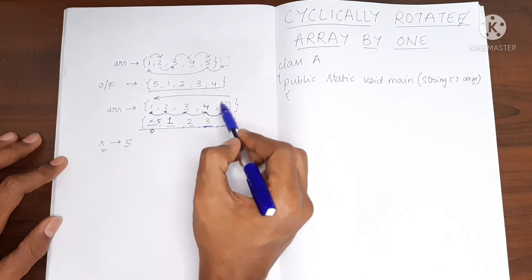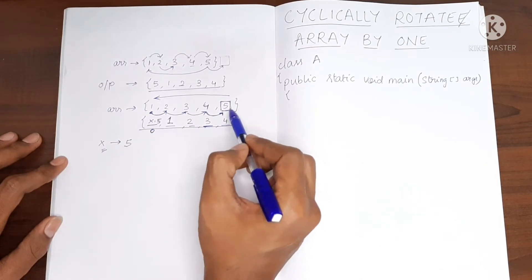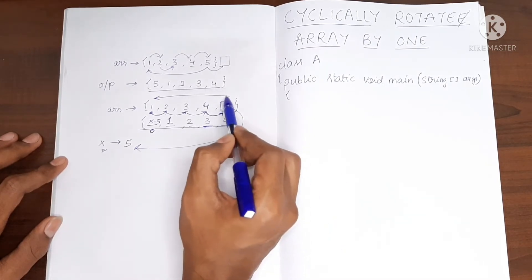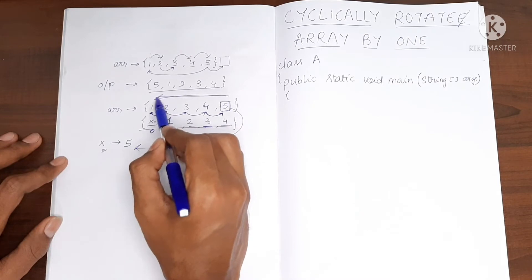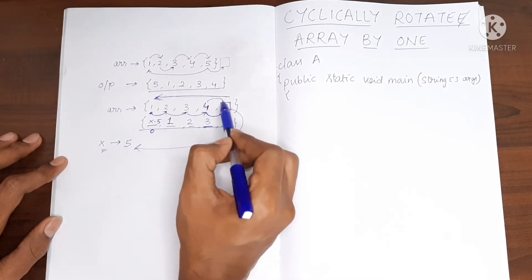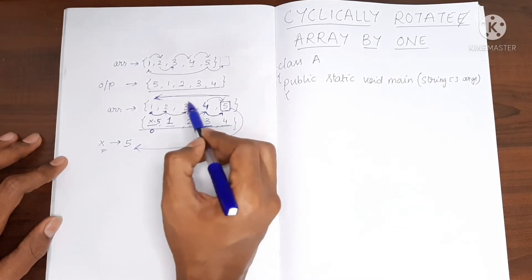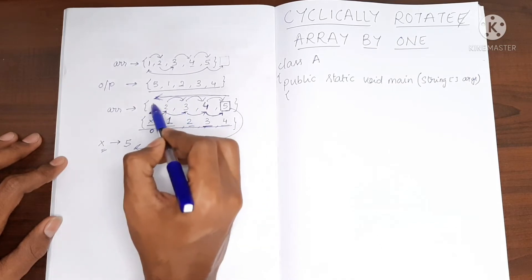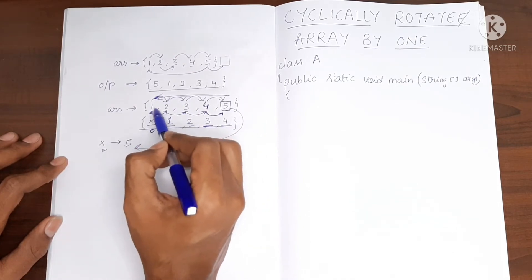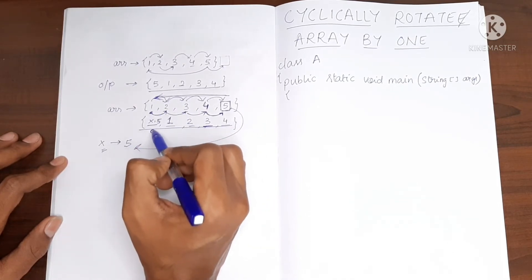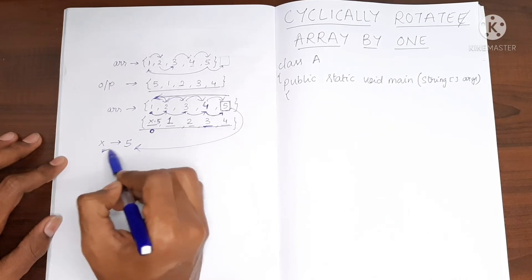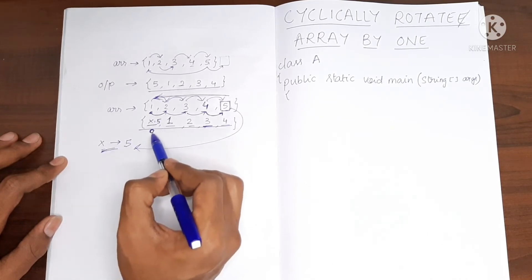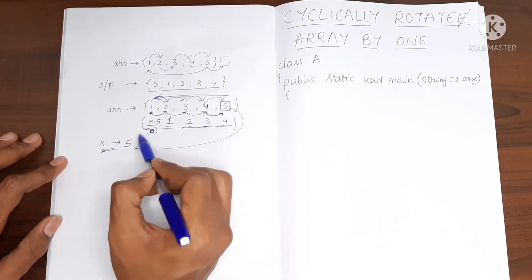So this is how I am going to do it. I am going to take the last element and store it away somewhere. Then I am going to traverse in the backward direction, moving every element to the next index location. Once I reach index number 0, I am going to take the stored value and put it at index number 0.